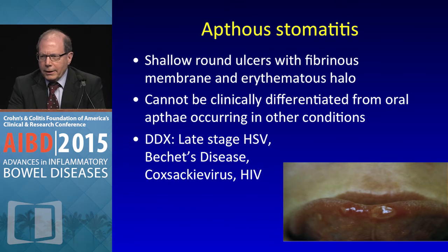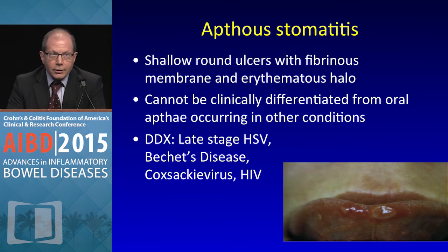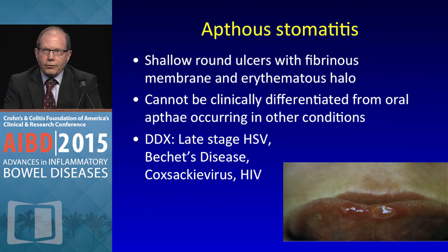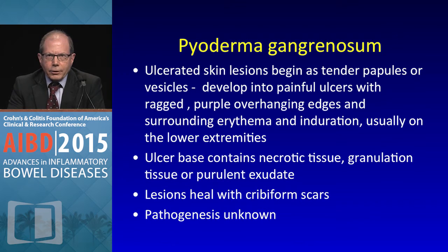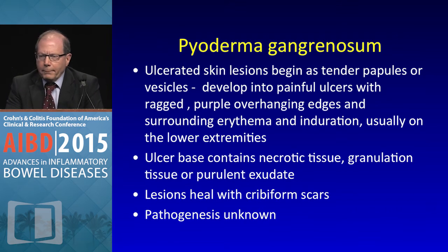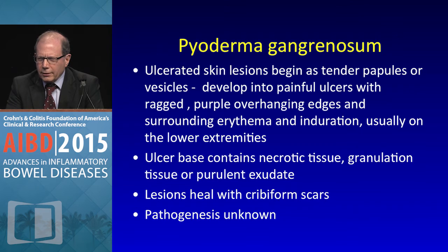Aphthous stomatitis is common — shallow ulcers that are hard to differentiate from late-stage HSV, Behçet's, Coxsackie virus, or HIV. Patients often report mouth sores preceding an IBD flare, so it usually follows the course of the IBD. If it doesn't, you have to think it's not from IBD itself. Pyoderma gangrenosum involves ulcerated skin lesions that begin as tender papules or vesicles, develop into painful ulcers with necrotic tissue. You can't grow organisms and the pathogenesis is still not clear.